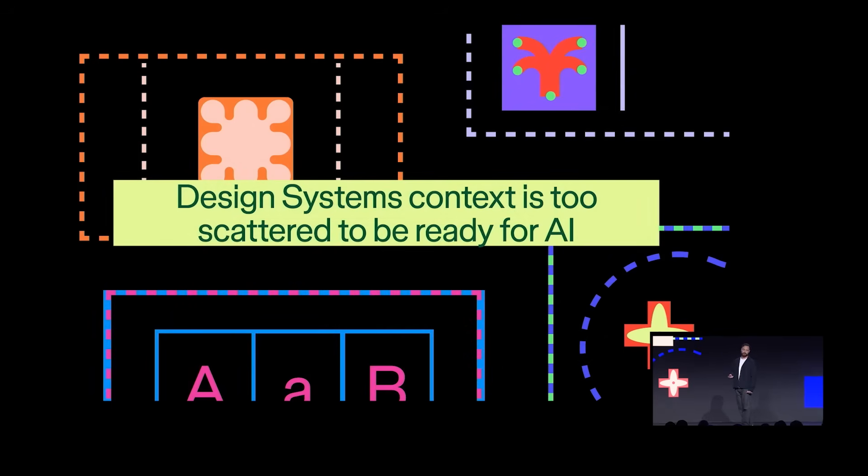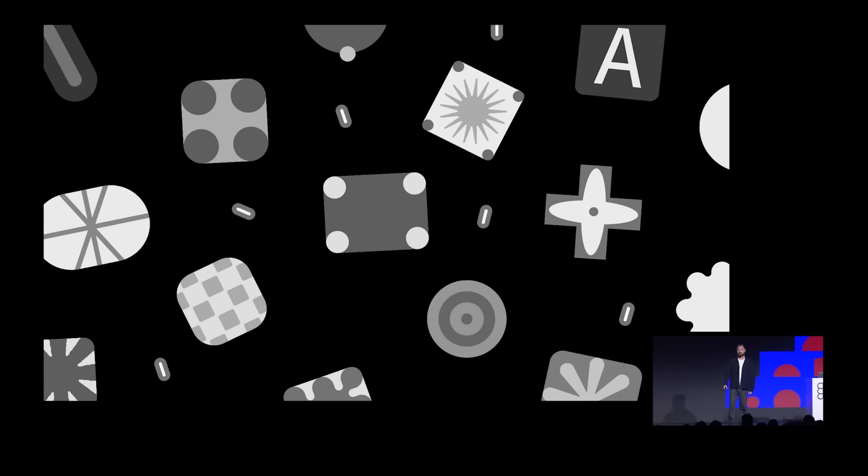The second problem is that design systems context is often spread across tons of tools and many different formats. You've got Figma files, docs, wikis, internal sites, libraries. It's a lot. And for some, the context is only in people's heads. On top of being fragmented, the context is also often out of date and inconsistent with itself. It's not structured in a way that humans can easily understand.